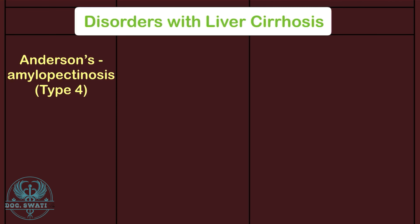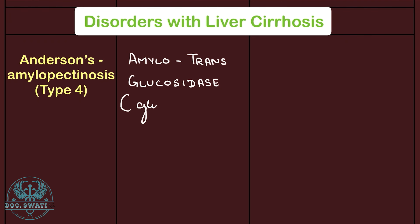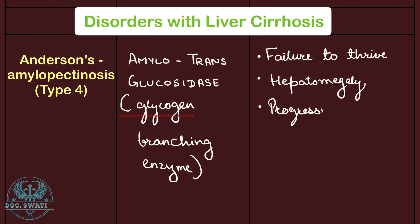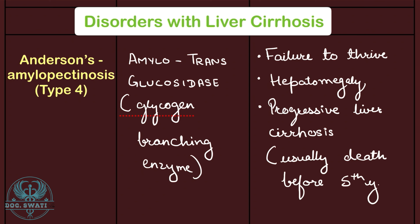In the liver cirrhosis category, we have Andersen's amylopectinosis, which is Type 4 glycogen storage disease. It is caused due to the deficiency of amylotransglucosidase, also known as glycogen branching enzyme. Clinical features include failure to thrive, hepatomegaly, progressive liver cirrhosis, and failure usually occurring before the fifth year of life.